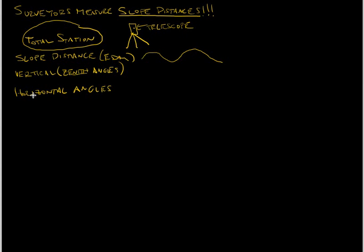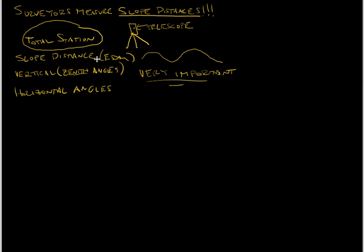And then horizontal angles — if the instrument is not horizontal, they're not going to be horizontal angles. So it's very important to have your total station level when making measurements, because vertical won't be vertical and horizontal won't be horizontal. So very important to have your instrument level.